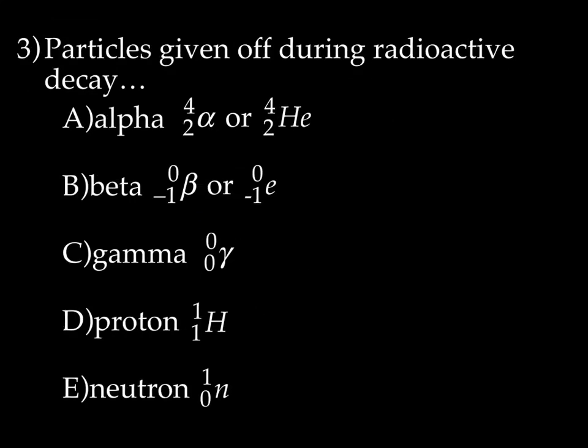So here are the particles given off during radioactive decay. The first three you should already be familiar with. We've got alpha, beta, and gamma. Alpha is symbolized by 4, 2 with an alpha symbol, or 4, 2, He. They're interchangeable. There's beta, which is 0, negative 1, beta symbol, or 0, negative 1, e. And gamma, which is not really a particle, it's a ray: 0, 0, gamma symbol.